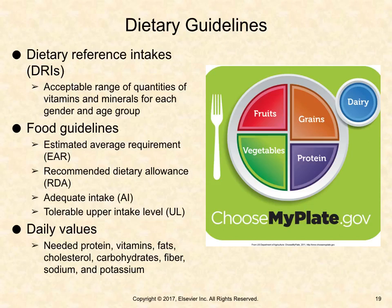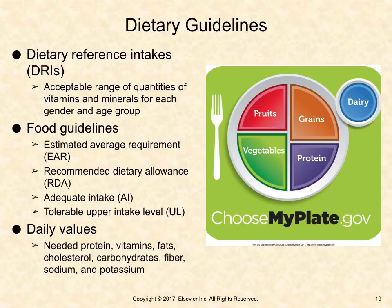The dietary reference index provides the acceptable ranges of vitamins and minerals for each gender and age group. Its four components are: estimated average requirement, recommended dietary allowance, adequate intake, and tolerable upper intake level. The FDA created daily values for food labels in response to the 1990 Nutrition Labeling and Education Act, comprising daily values for proteins, vitamins, fats, cholesterol, carbohydrates, fiber, sodium, and potassium, based on percentages of a 2,000 kcal diet for adults and children 4 years or older.